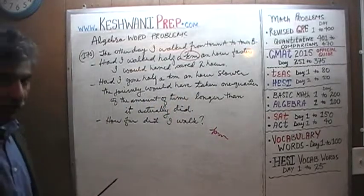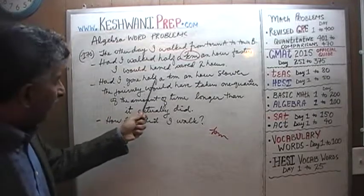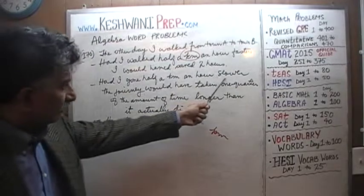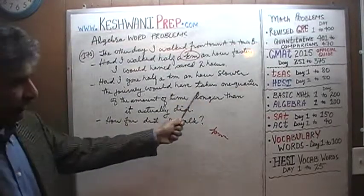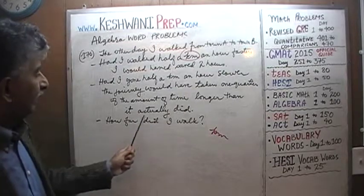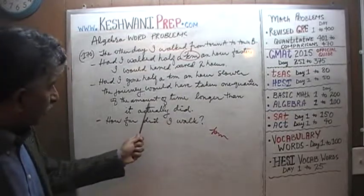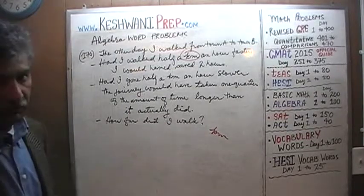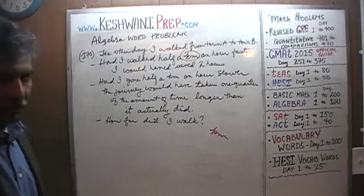Before they go on to tell us: had I gone half a kilometer an hour slower, the journey would have taken one quarter of the time longer than it actually did. It's very important that we understand the wording. The question simply is: how far did I walk?